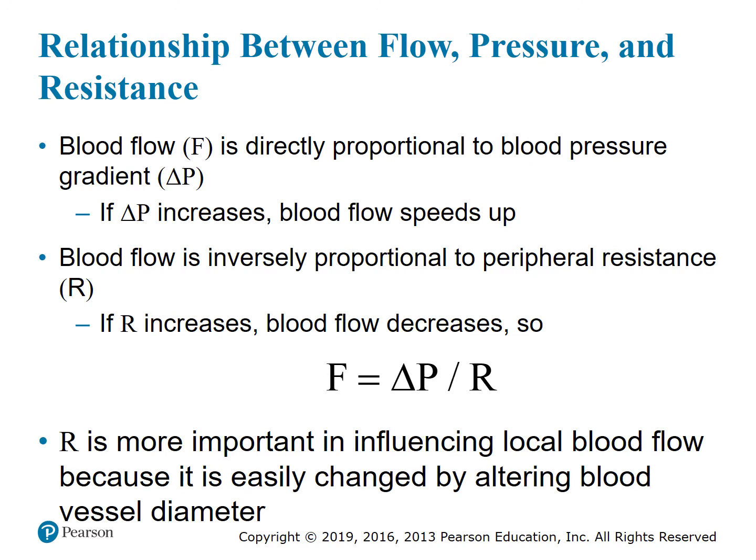The relationship between flow, pressure, and resistance: blood flow is directly proportional to the blood pressure gradient — if ΔP increases, blood flow speeds up. Blood flow is inversely proportional to peripheral resistance — if resistance increases, blood flow decreases. Resistance is more important in influencing local blood flow because it is easily changed by altering blood vessel diameter.